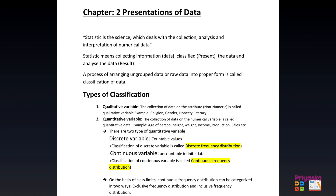A discrete variable has countable values, and its classification is known as discrete frequency distribution. A continuous variable has uncountable, infinite data, and its classification is called a continuous frequency distribution. These two concepts will become more clear when you start with the exercises.